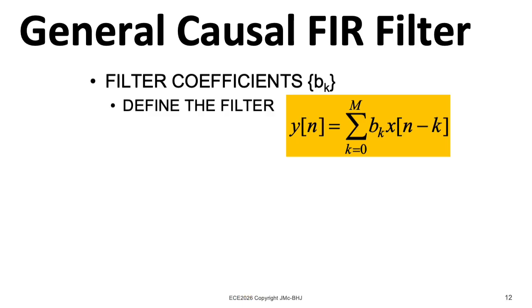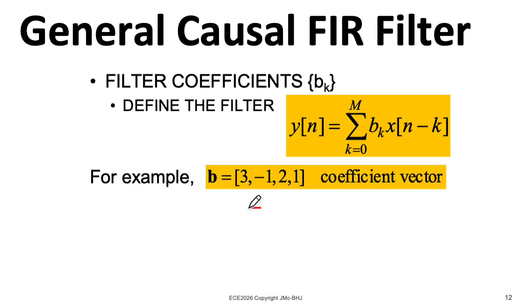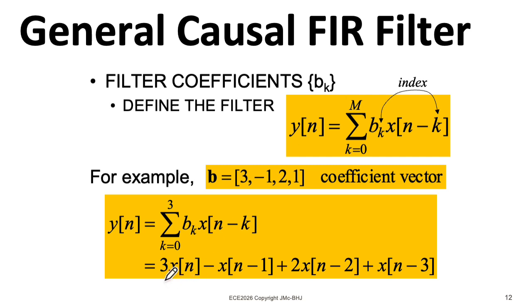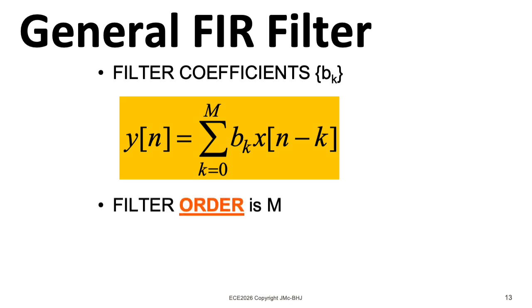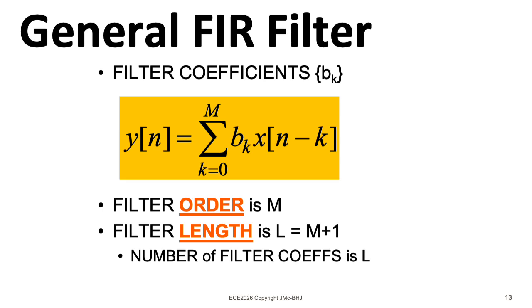Now let's generalize our idea of this averager that looks into the past, but also includes the present, to allow these generalized weights b sub k. b0 would correspond to the weight of the present sample, b1 one step in the past, b2 two steps in the past, and so on, up to m steps in the past. We could write b in terms of a vector of coefficients, where by convention the first coefficient listed here is b0. And stepping through all the indices for this particular example, we could write this as 3xn, minus xn minus 1, plus 2xn minus 2, plus xn minus 3. Now, one of these coefficients in the middle here could be 0, indicating that a particular term is missing from the summation.